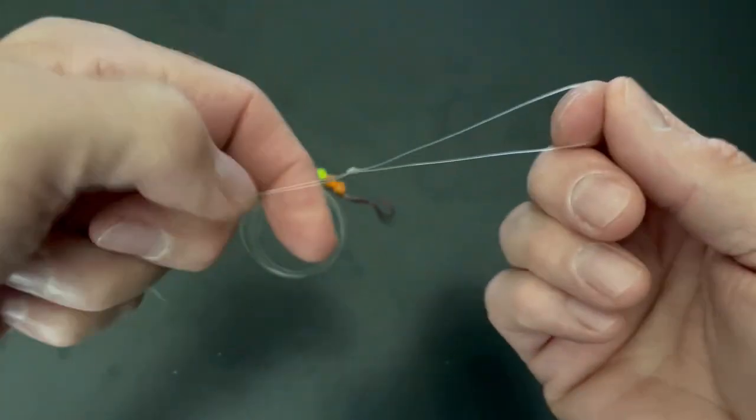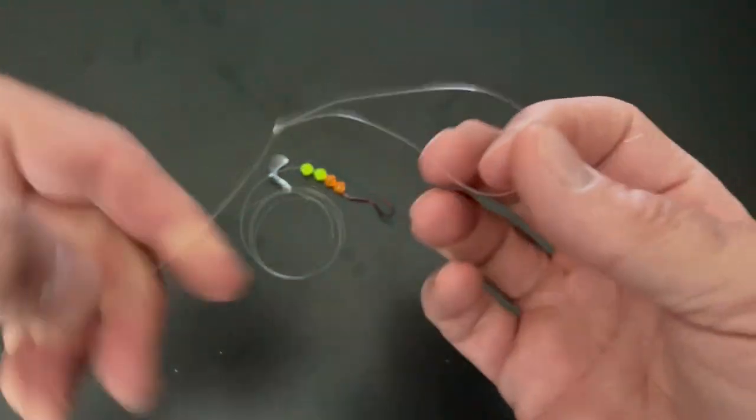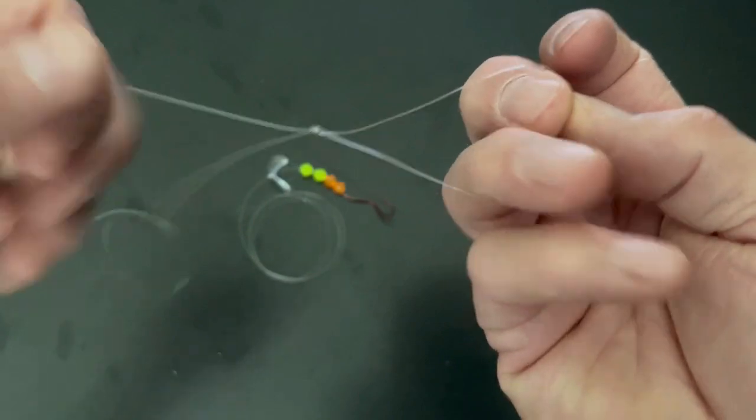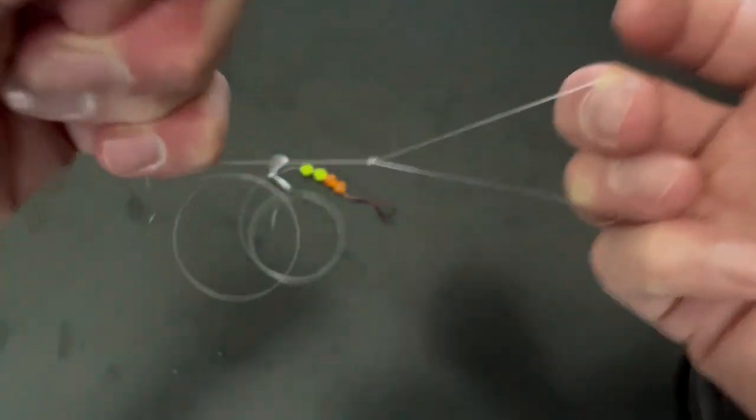And then the other end of my leader, which is usually three or four feet long, I just put a standard loop knot. Pretty simple. If you want to see how to do this, just look in the links below. There's a video on how to tie a loop knot. It's very durable, very strong. Don't let anybody tell you differently. The harder you pull on this thing, the tighter it gets. It will hold up.